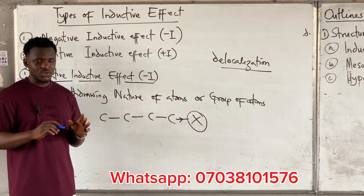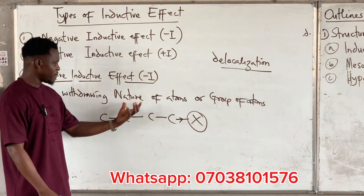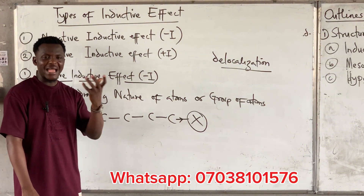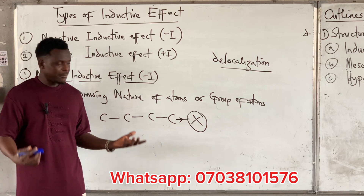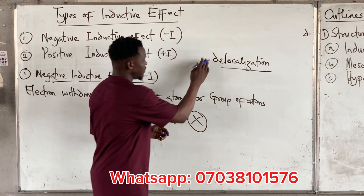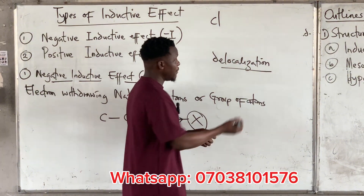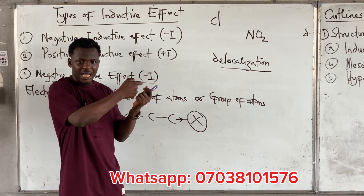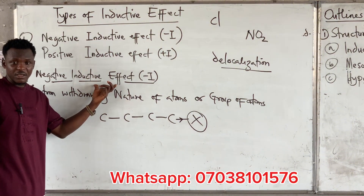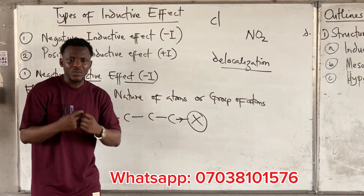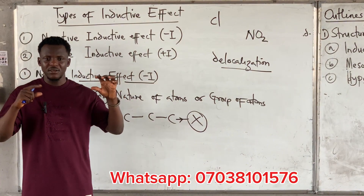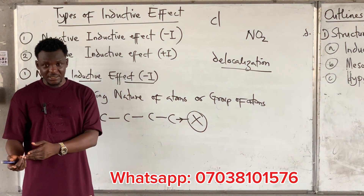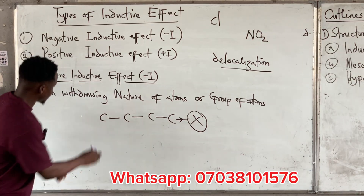So that's what negative inductive effect means. In terms of exam questions, nobody is going to ask you to define negative I directly. They might say: circle amongst the following the minus I substituent. A substituent can be an atom — in the case of chlorine — or a group of atoms, in the case of NO2. Anything attached to a carbon that starts withdrawing electrons is exhibiting negative inductive effect. Let's look at examples of minus I substituents.